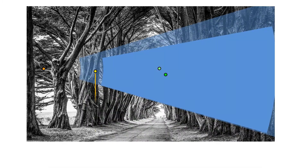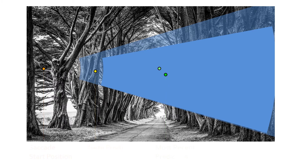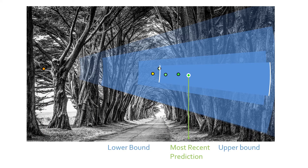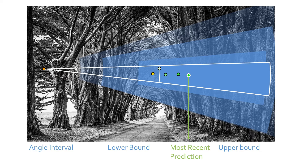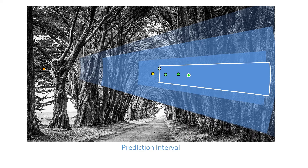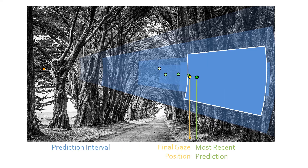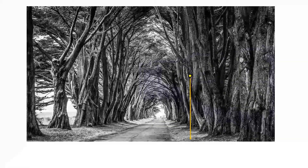We propose a technique which utilizes our model: given the current gaze sample and the starting position of the saccade, it provides a prediction of the next fixation location. The prediction is continuously improved as new samples from the eye tracker become available. Additionally, our technique provides confidence intervals that visualize the accuracy of our prediction. Towards the end of the saccade, our prediction and the final fixation closely match the final fixation location.